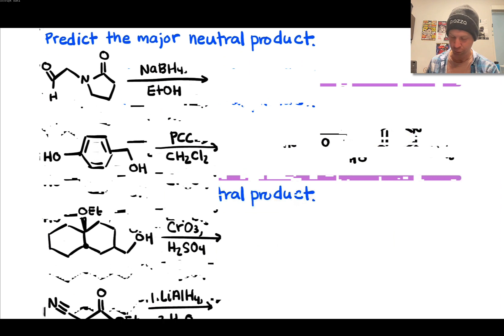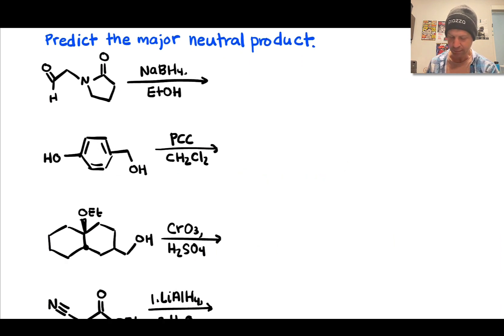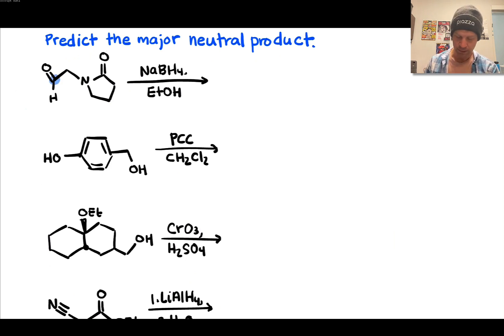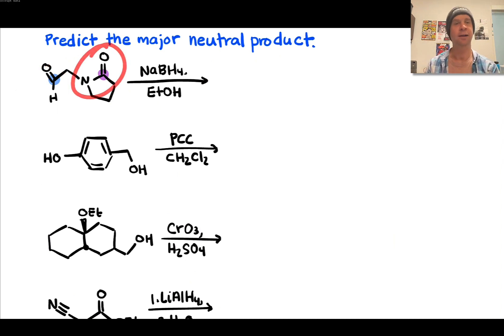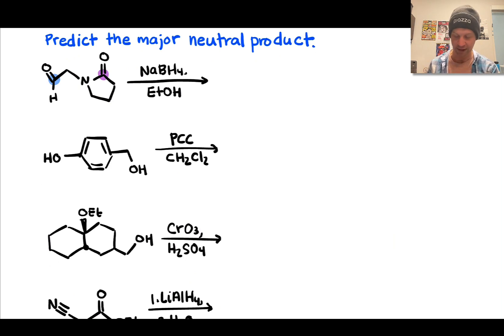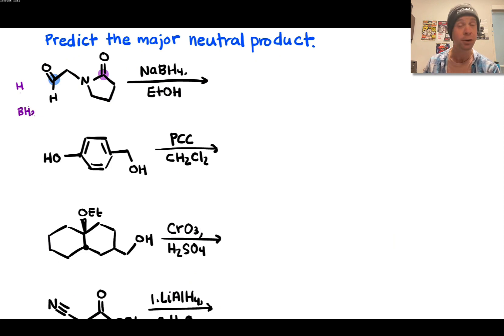In the second problem, we're asked to predict the major neutral product of each reaction. In the first case, sodium borohydride in ethanol solvent is combined with an organic substrate that has two carbonyl groups: an aldehyde (connected to an H and a CH₂) and an amide (connected to a carbon and a nitrogen). NaBH₄ is Na⁺ and BH₄⁻; BH₄⁻ is a strongly nucleophilic species with very nucleophilic hydrogens, since hydrogen is more electronegative than boron.